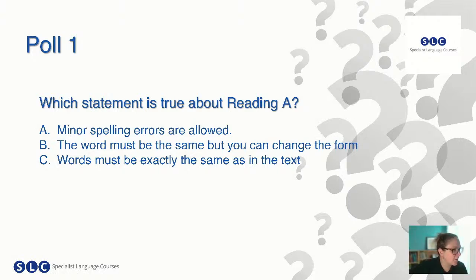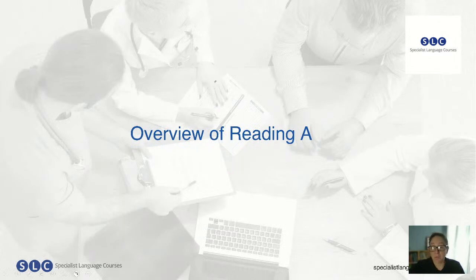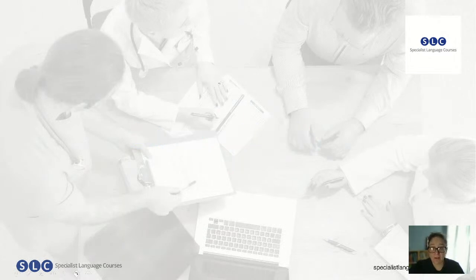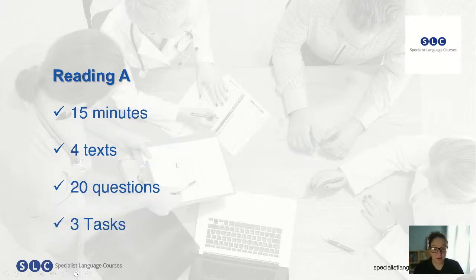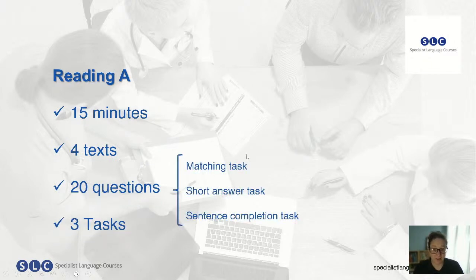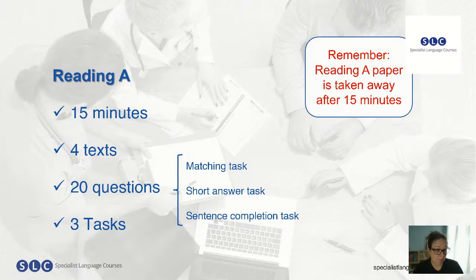I can see lots of answers coming in, and if not most of you are saying C, which is great — that's the correct answer. In reading A, the words must be exactly the same as in the text. So let's do a quick recap of reading A for anyone new to OET. Reading A is 15 minutes long with four texts and 20 questions, and there are three different task types: a matching task, short answer task, and sentence completion task. Remember the reading A paper is taken away after 15 minutes.